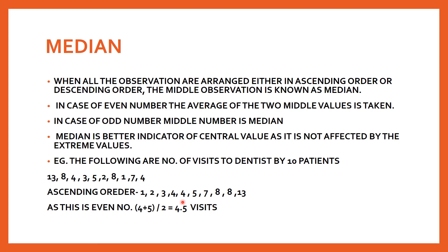For an even number of observations, there is no single middle value, so you take the average of the two middle values. There are four values on each side of these two middle values. You add the two middle numbers - for example 4 and 5 - and divide by 2, giving 4.5 visits as the median. So for even numbers, the average of two middle values is taken; for odd numbers, the middle number is the median.